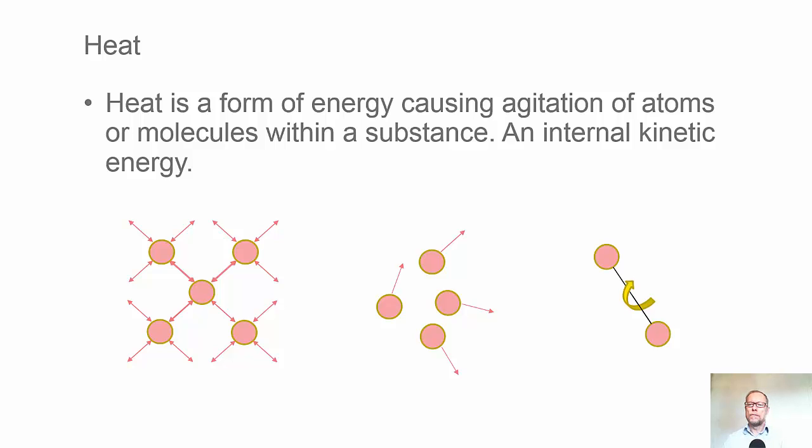Heat is a form of internal kinetic energy. The three pictures below illustrate how different atoms and molecules can vibrate inside a material, or they can move around, or they can have rotational energy.